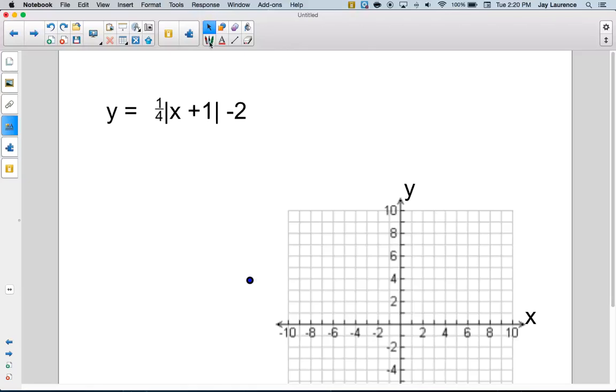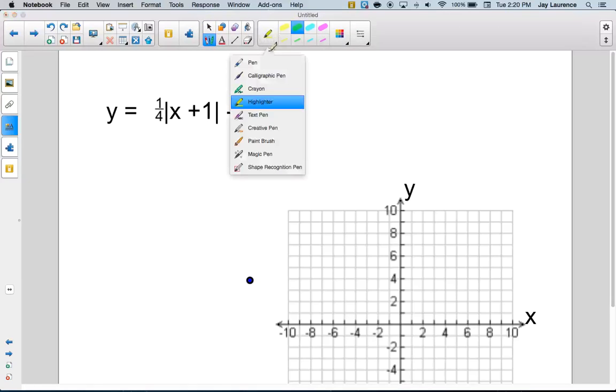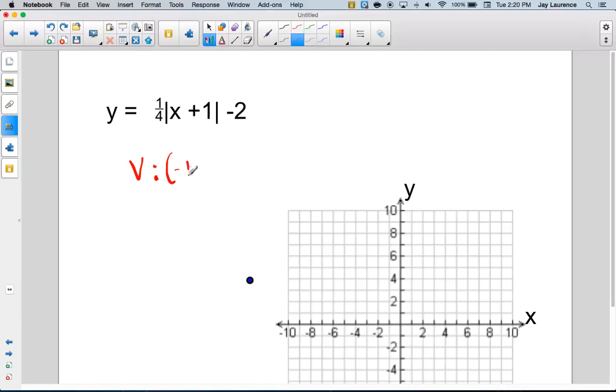All right. Here comes my solution. First of all, the vertex. The vertex is sitting at (-1, -2). All right. Negative 1, negative 2. So let me see. I think it'd be right about here, right?